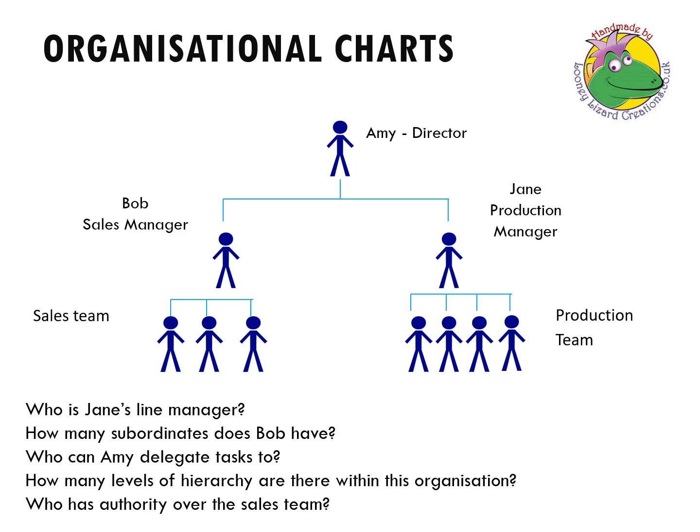Let's go through some questions to see how we use this organizational chart. Who is Jane's line manager? Jane is the production manager — who does she report to? The correct answer is Amy. How many subordinates does Bob have — how many people work below or report to Bob? That's three. Who can Amy delegate tasks to? Delegation is passing on responsibility for completion of a task, and she can delegate down to Bob and to Jane.